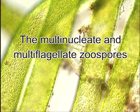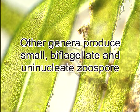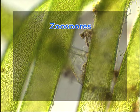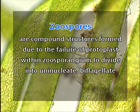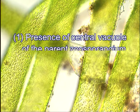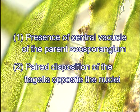The multinucleate and multiflagellate zoospores are peculiar to Vaucheria. All other related genera produce small, biflagellate, uninucleate zoospores developed in large numbers in each zoosporangium. The zoospore is a compound structure formed as a result of the failure of protoplasts within the zoosporangium to divide into uninucleate biflagellate zoospores. Thus, it may be more appropriate to term it a synzoospore — a view supported by two facts: the presence of the central vacuole of the parent zoosporangium, and the peripheral disposition of the flagella opposed to the nuclei.